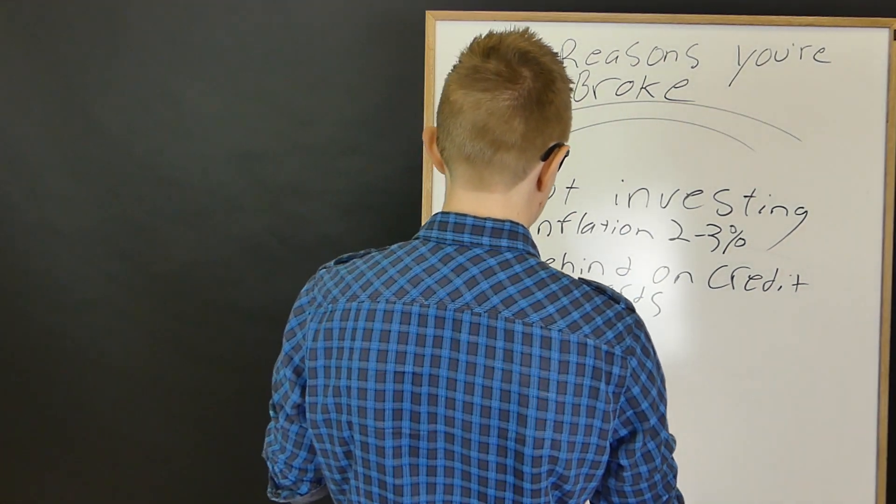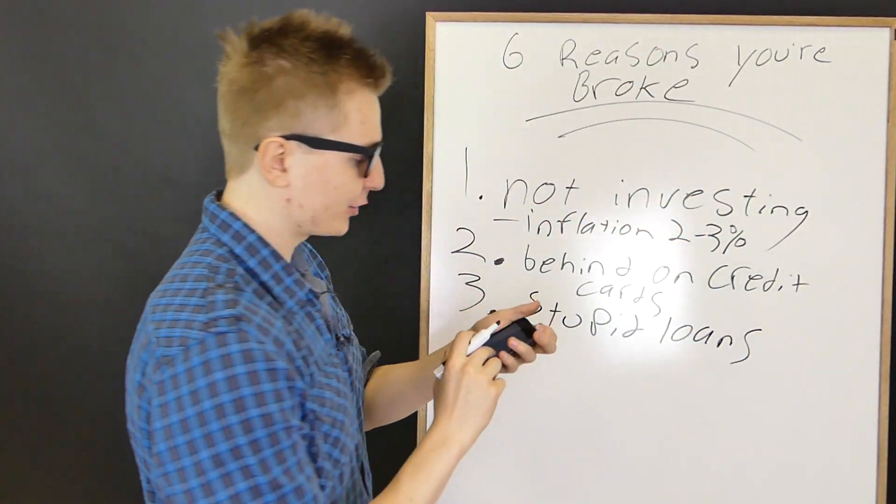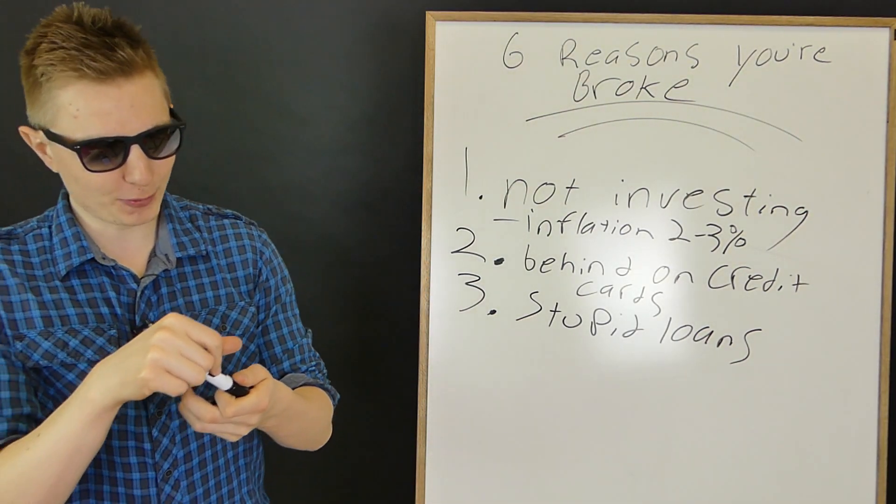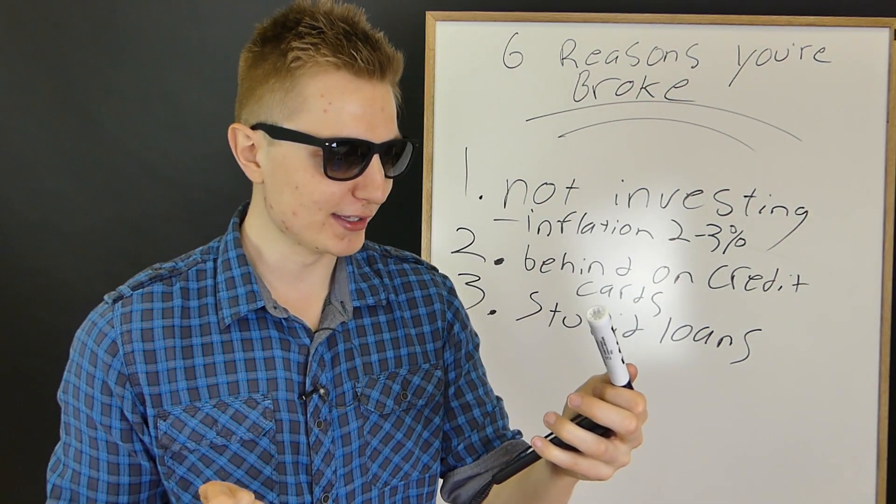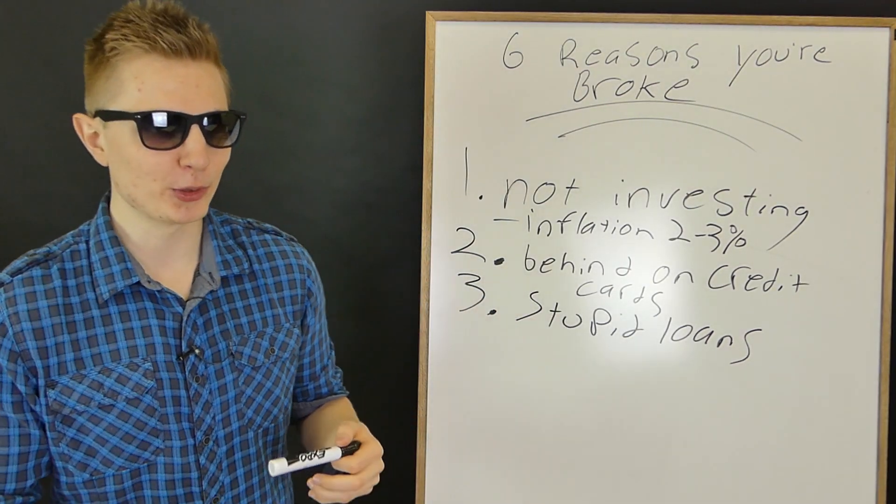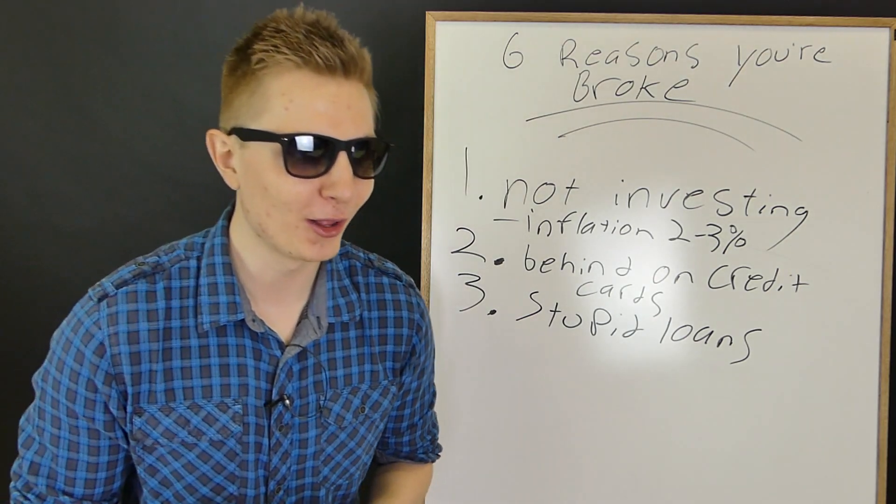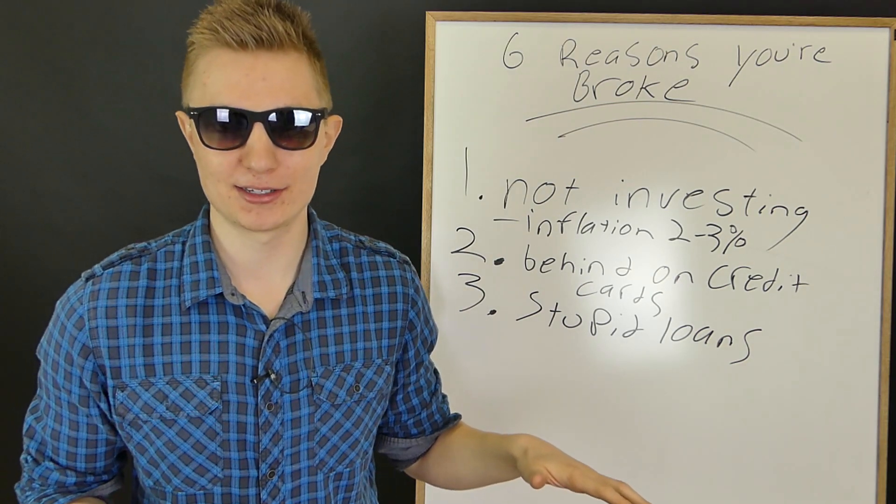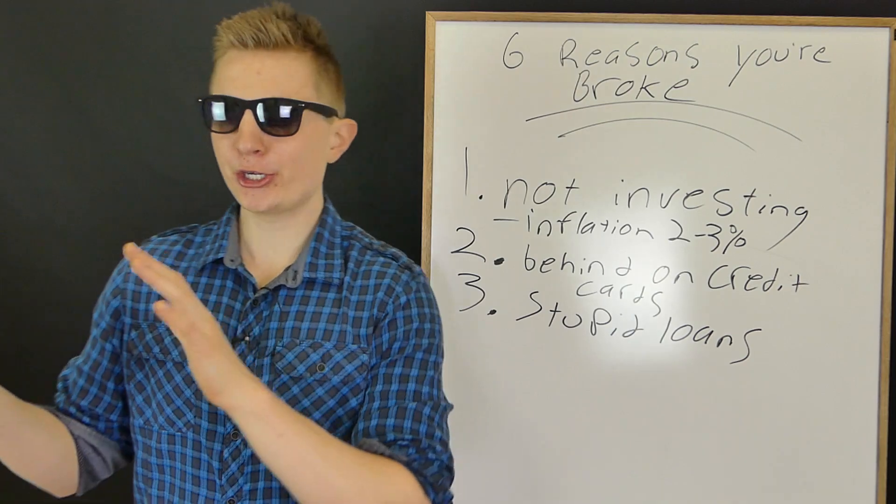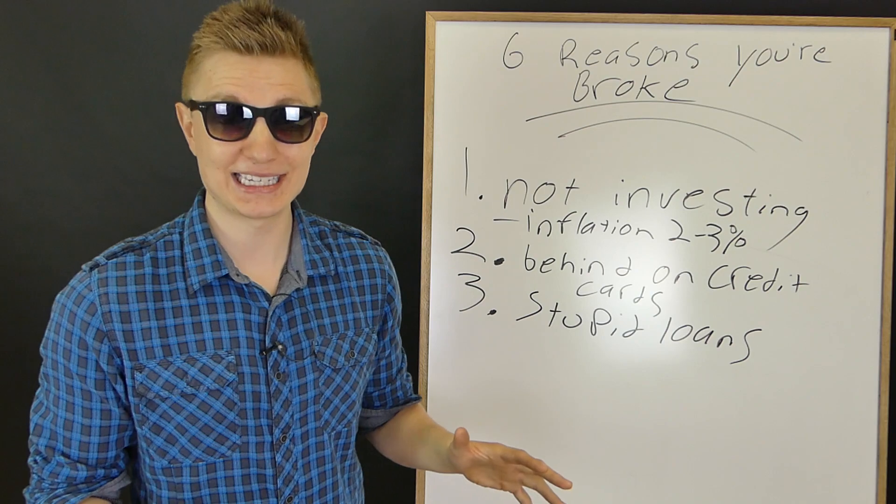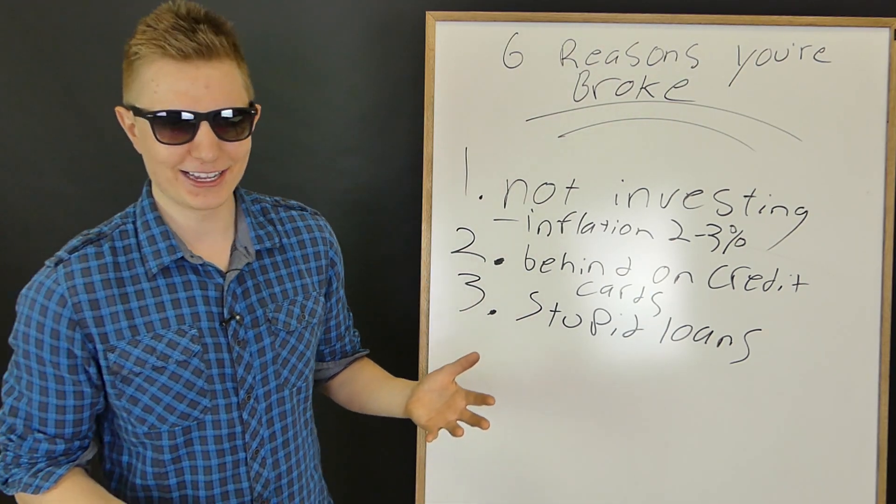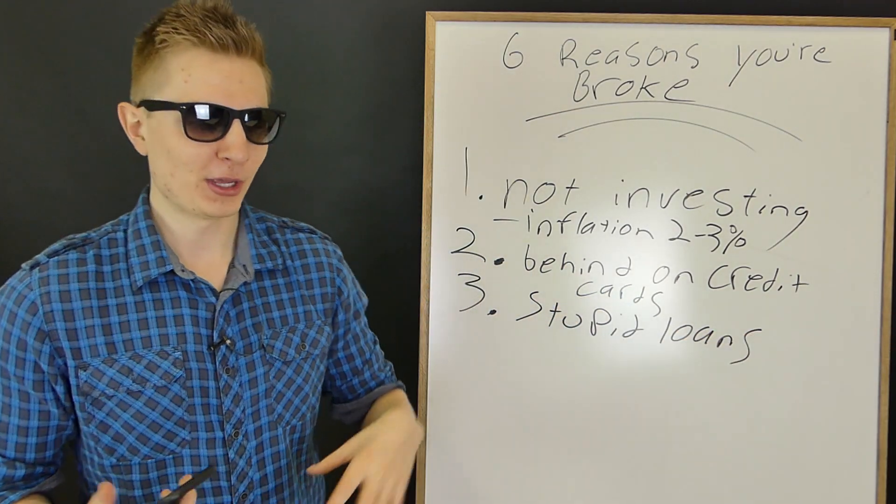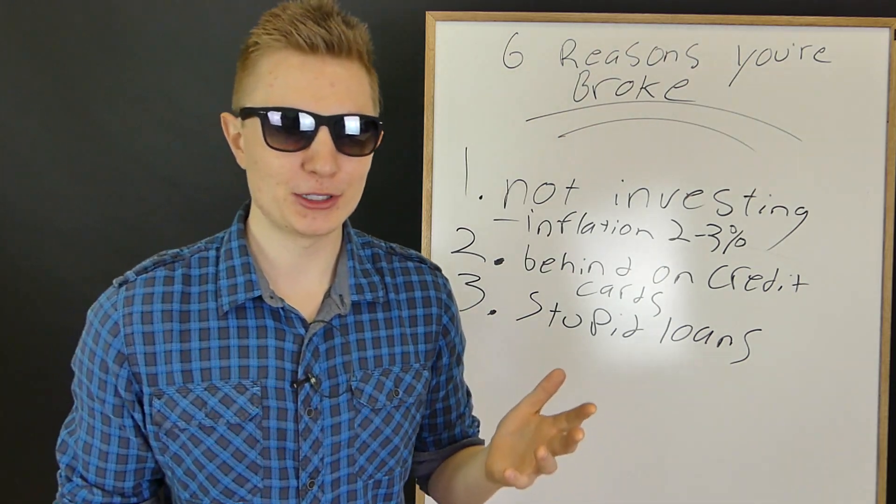Number three is stupid loans. This goes really close to credit cards because credit cards are essentially a loan. Student loans or stupid loans. Student loans are stupid sometimes. But the main stupid ones are auto loans. I listen to Dave Ramsey sometimes and he has these callers call in. They make $30,000 a year and they buy a $30,000 car and there's no down payment. You're essentially taking out a loan for a depreciating asset that is worth as much as a year of your before tax income. Isn't that stupid? Don't do that. If you're making $30,000 a year, get a beater. If you need a car, get a $8,000 beat up car that has 50,000 miles on it. Don't get an auto loan.